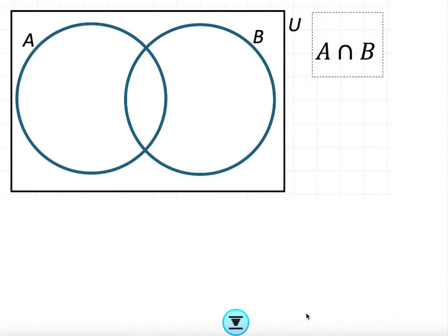This will be a quick video on illustrating regions using Venn diagrams, dealing with two sets and three sets. The idea is to know how the shading works so that if you have any descriptions of Venn diagrams or they want you to shade certain regions, you would know which regions they're talking about. The most basic region is A intersect B, which relates to where the two areas meet — precisely the intersection of A and B.